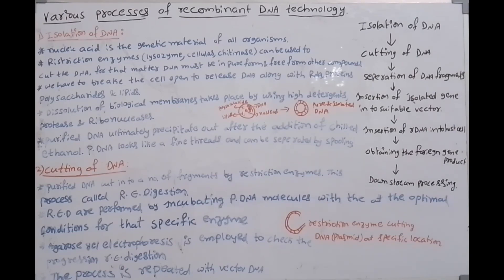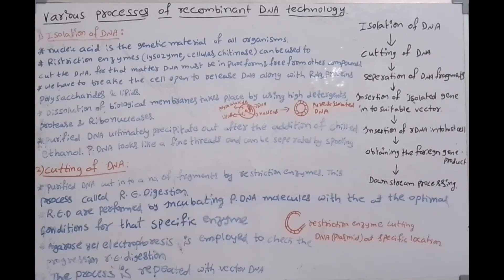What is recombinant DNA? Recombinant DNA means we first select a foreign DNA and a vector DNA, then fragment these DNAs and attach them with ligases to produce a new DNA. That new DNA is called recombinant DNA, which is used in genetic engineering and biotechnology techniques.